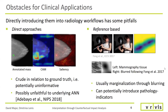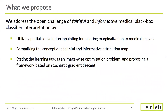Addressing these obstacles, we propose a reference-based attribution method where we utilize partial convolution inpainting for tailoring marginalization to medical images. We formalize the concept of faithful and informative attribution maps and state finding such a map as a learning task solvable through stochastic gradient descent.